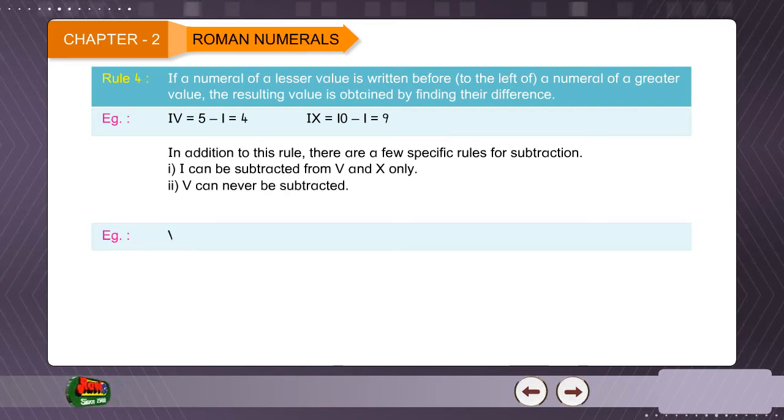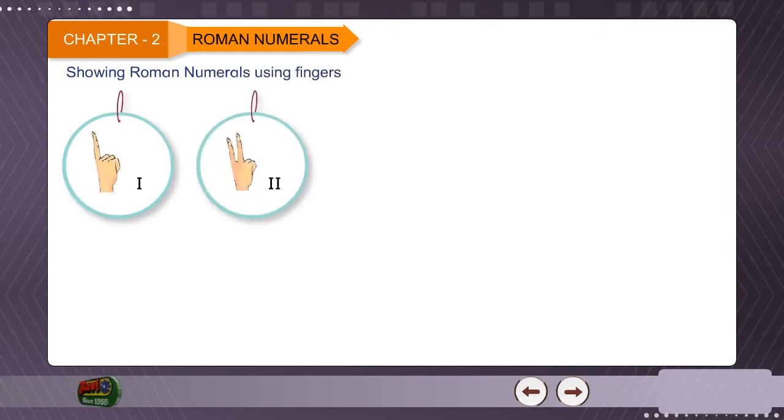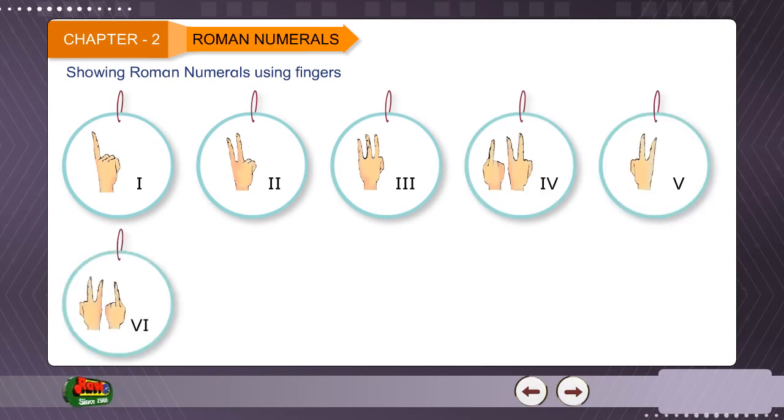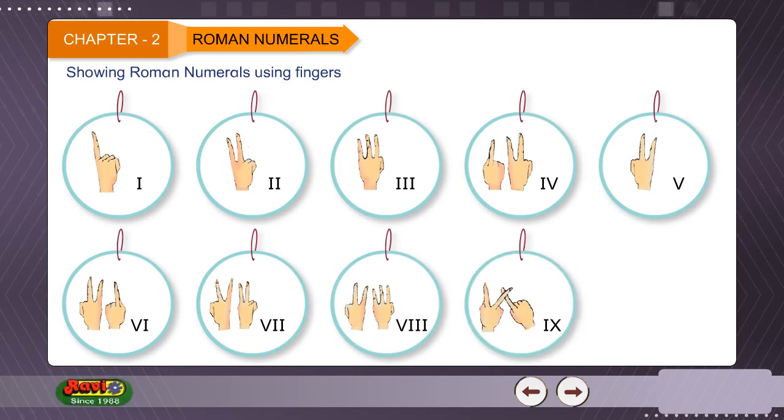2. V and X together is not equal to 5. 10 minus 5. Showing Roman numeral using fingers. 1, 2, 3, 4, 5, 6, 7, 8, 9, 10.